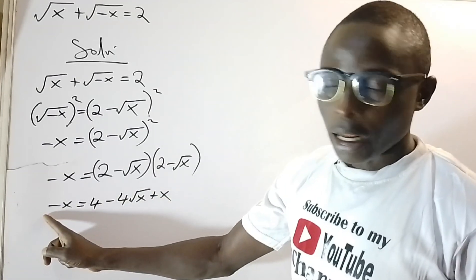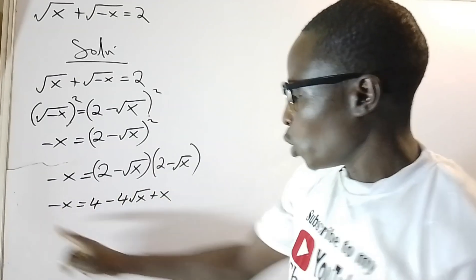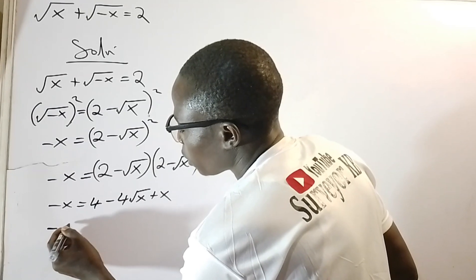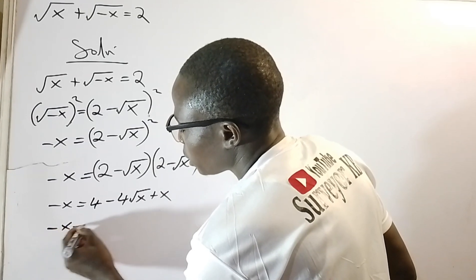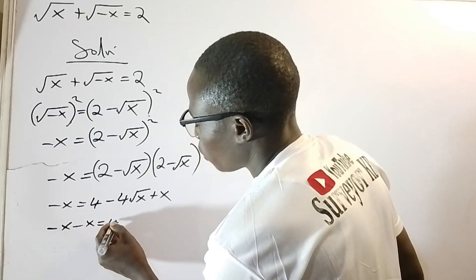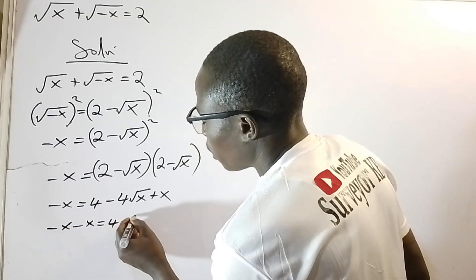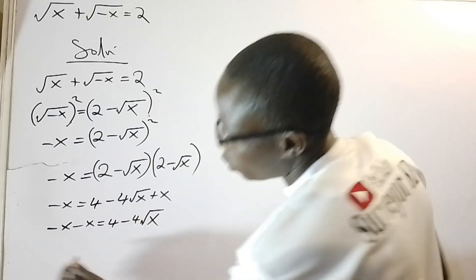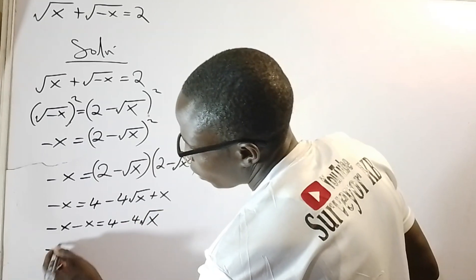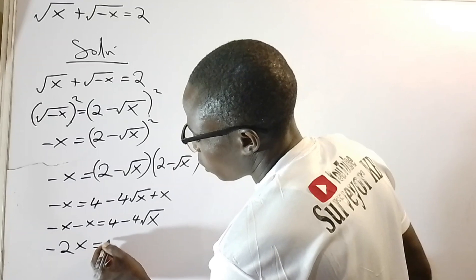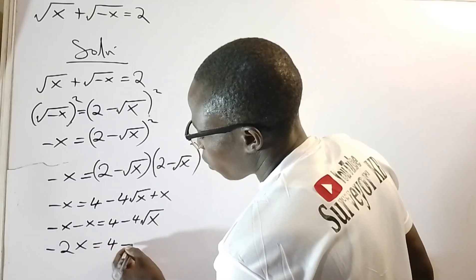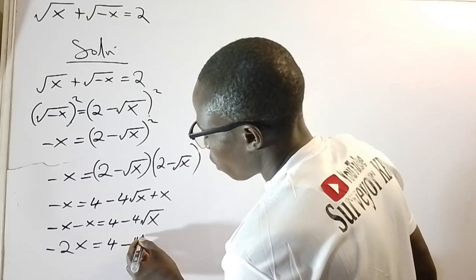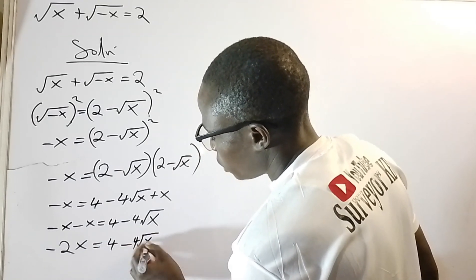This x and that x are like terms, so we collect them: negative x minus x equals 4 minus 4 root x, giving us negative 2x equals 4 minus 4 root x.